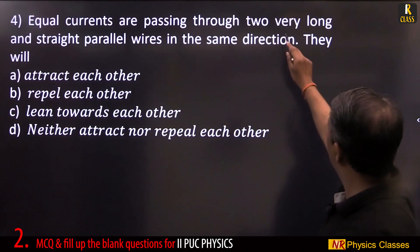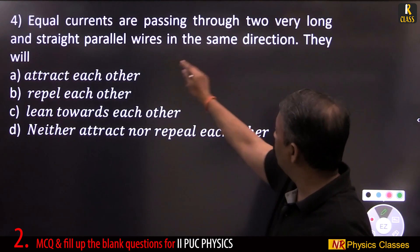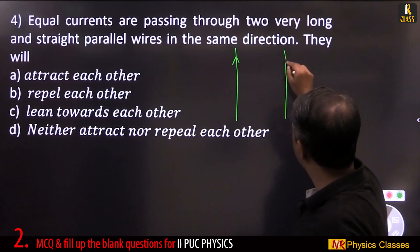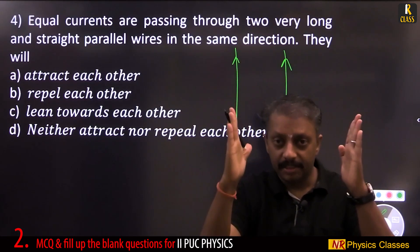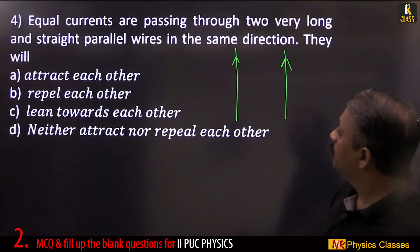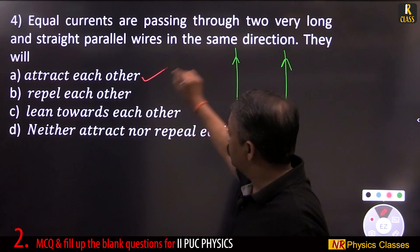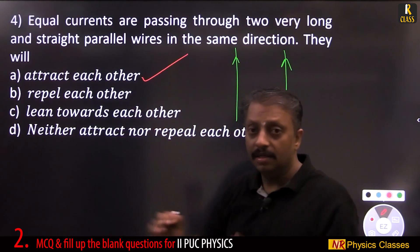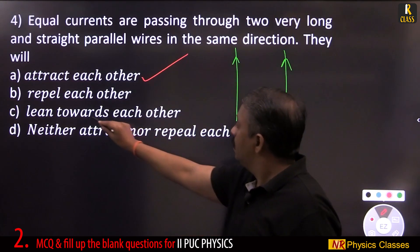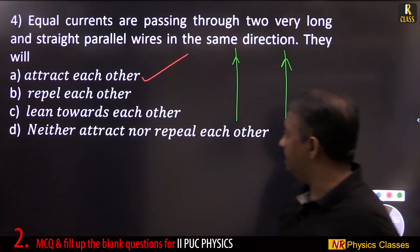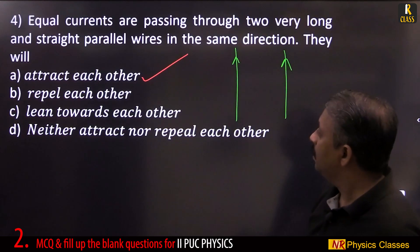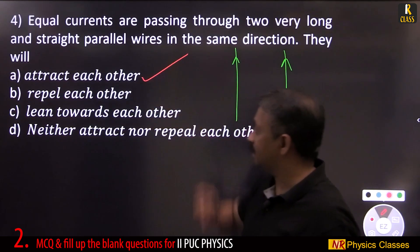Equal currents passing through two very long straight parallel wires in the same direction — remember, same direction means attraction. If they are in opposite directions, there is repulsion. So the wires attract each other when current flows in the same direction.